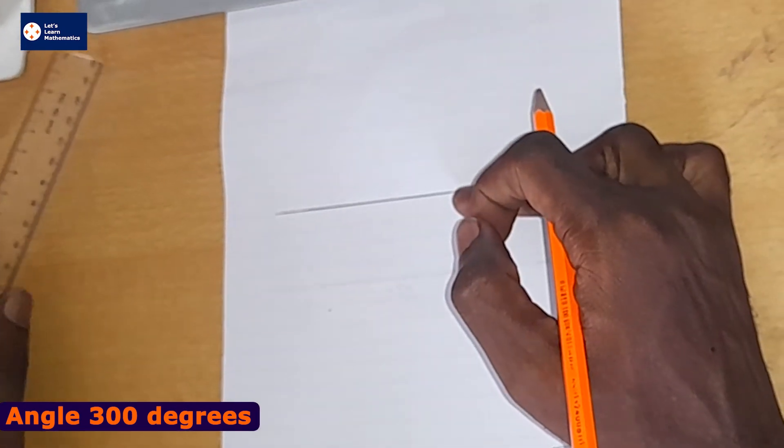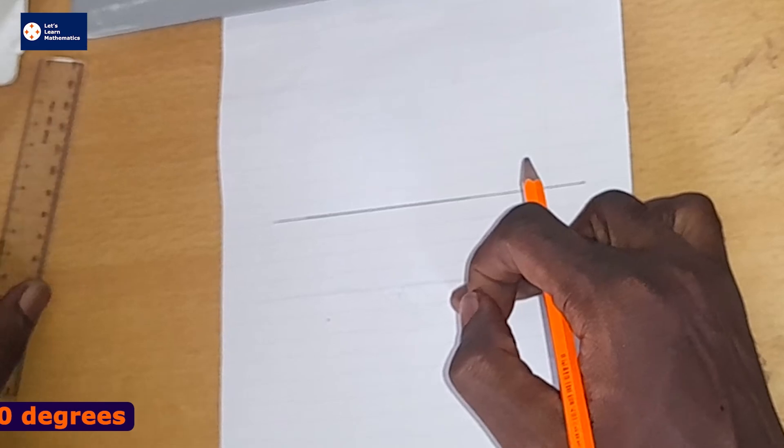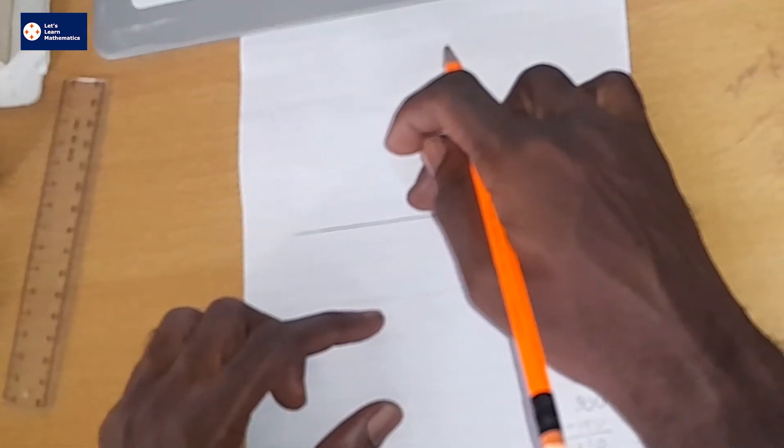That means I have to draw 120 degrees down here to be able to add it to the 300 degrees at the top.